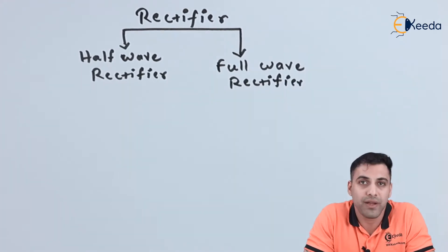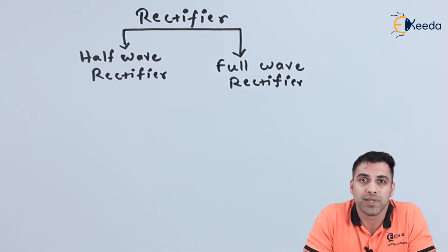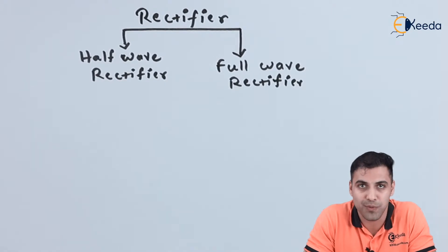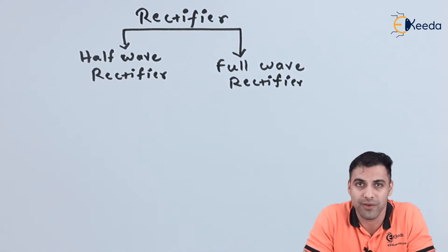For a half-wave rectifier and full-wave rectifier, we can give two types of supply: one can be single-phase supply or can be three-phase supply. So there is single-phase half-wave rectifier or three-phase half-wave rectifier. Again for the full-wave rectifier, it can be single-phase or three-phase.